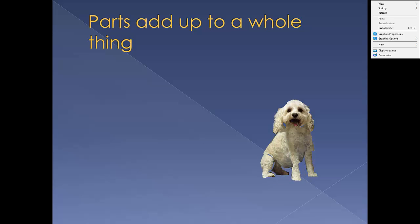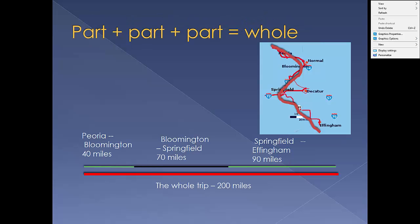Or more realistically, if I drive 40 miles from Peoria to Bloomington, then 70 miles from Bloomington to Springfield, and then 90 miles from Springfield to Effingham, I'd find out my total miles by adding them together. It's still same-to-same.